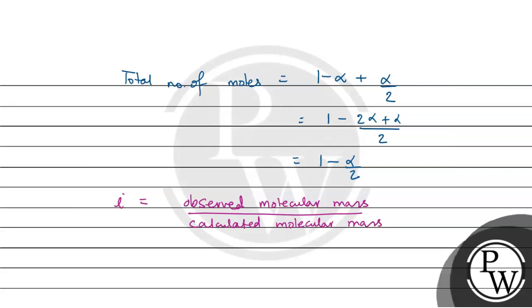This comes out to be i equals 1 minus α by 2 upon 1. Putting the value of i, 0.512 equals 1 minus α by 2. And then alpha comes out to be 0.976, and then we can say 97.6%.